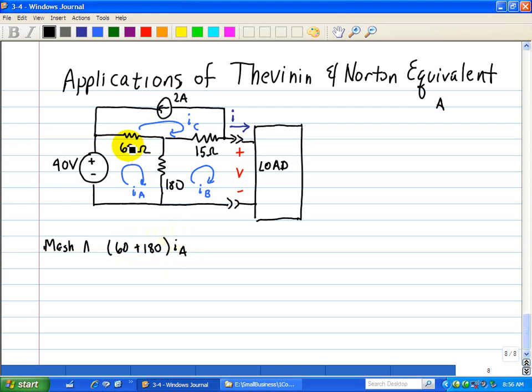Now, what currents are common going through the 60 ohm resistor is minus IC. And what's common through the 180 ohm resistor is minus IB. So, we have 180 IB minus 60 IC. And then we have the minus 40 on the left side, but putting in the other side is 40 volts. So, that's for mesh A.